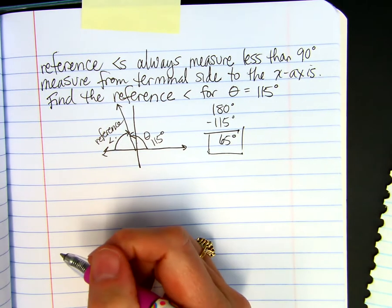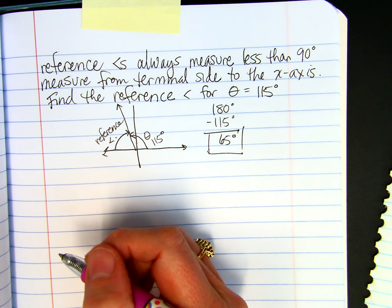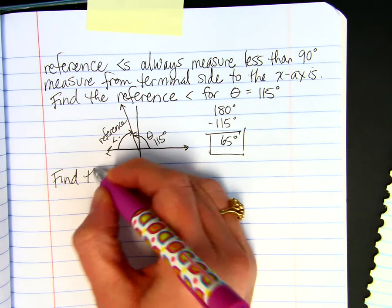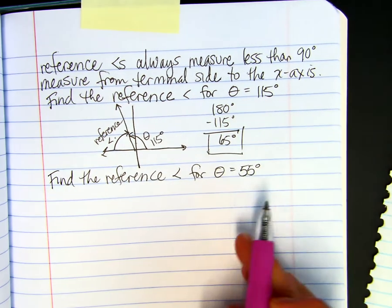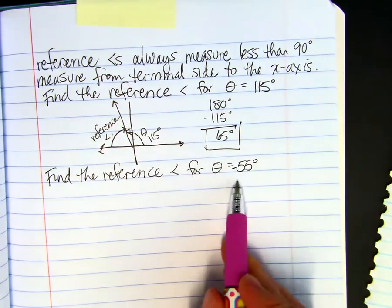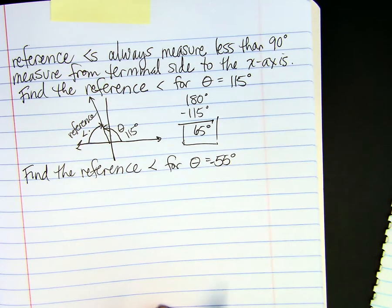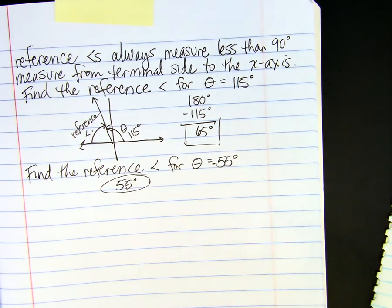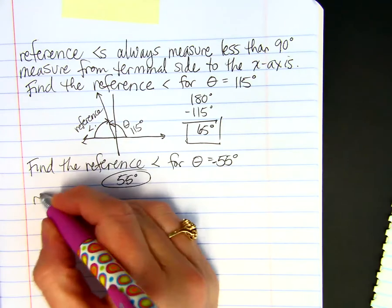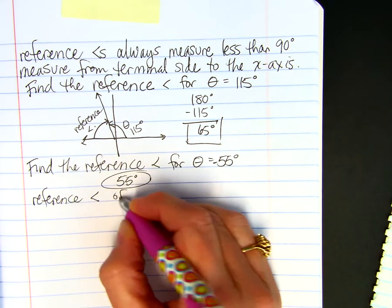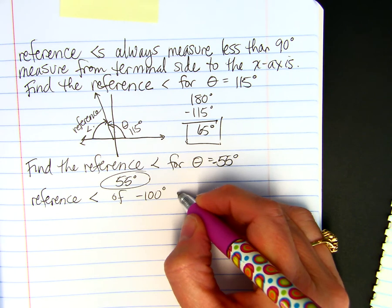Let's find the reference angle for theta equals negative 55 degrees. If they give you an angle measure whose absolute value is already less than 90 degrees, then that's the reference angle. So the reference angle here would just be 55 degrees. Because that's how far away from the X axis negative 55 degrees is. For the 115, isn't it just the angle that's supplementary to it? Yes. It is.